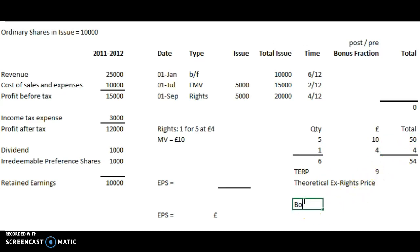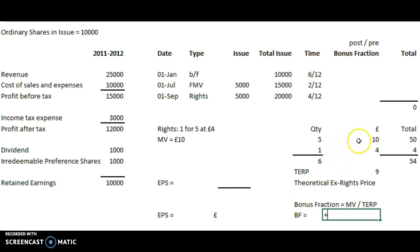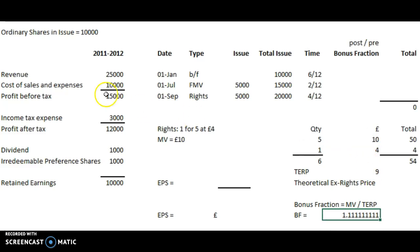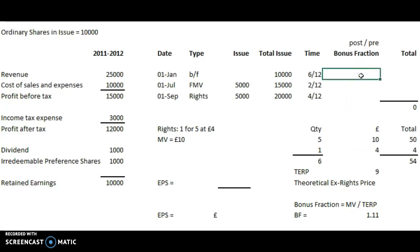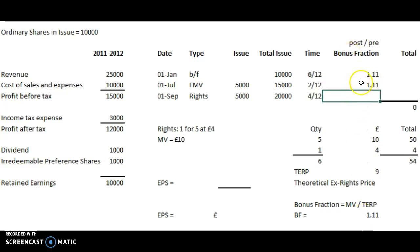The bonus fraction is equal to the market value over the theoretical ex-rights price. So the bonus fraction is market value £10 divided by £9, which gives 1.11. That's our bonus fraction, which we can now put into our calculation. We use 1.11 to boost the value of the pre-rights issued shares.